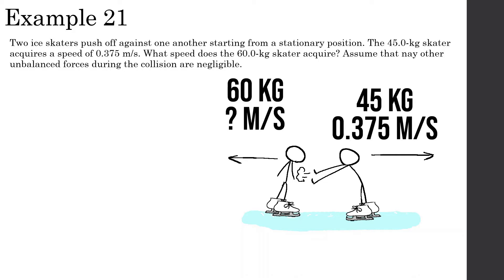So I know this doesn't seem like an explosion, but what we have with an explosion is we have pieces or something that is together and then they break apart. And that's what's happening here — these two people are together at the very beginning, but then they push off each other and explode and go into different directions. So remember for these explosion problems, we're going to treat them the same way: momentum initial is equal to momentum final.